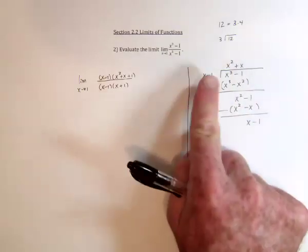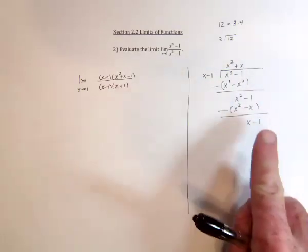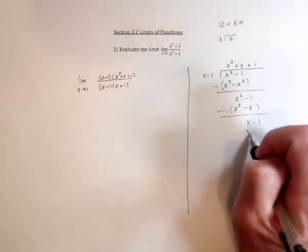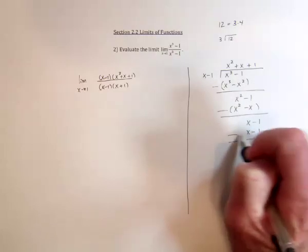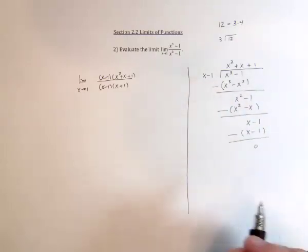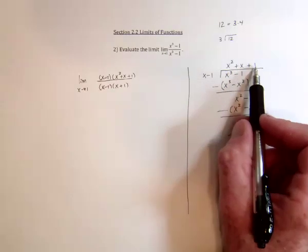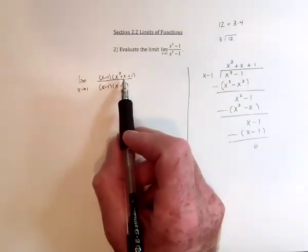And finally, it's an x minus 1 divided into an x minus 1. That will go one time with a remainder of 0. And so we get x squared and an x and a 1, just like that formula did.